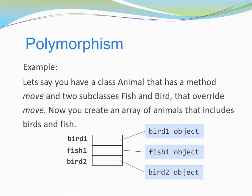This is polymorphism. We invoke the method move on animals, but depending on the actual type of the animal, move does different things — it has different forms of behavior.